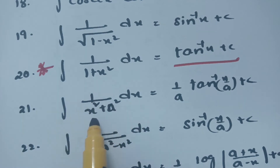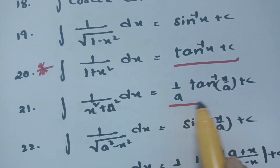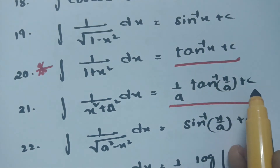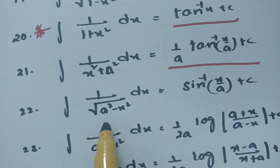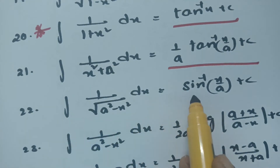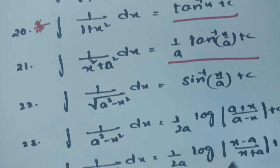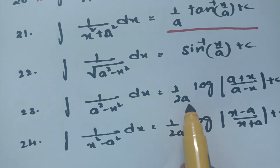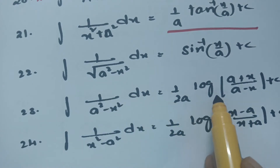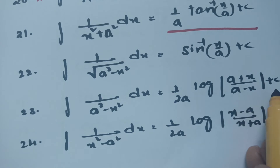If we replace 1 with a², then integral of 1/(x² + a²) dx is nothing but (1/a) tan⁻¹(x/a) plus c. Integral of 1/√(a² − x²) dx is equal to sin⁻¹(x/a) plus c. Integral of 1/(a² − x²) dx is equal to (1/2a) · log[(a + x)/(a − x)] plus c.